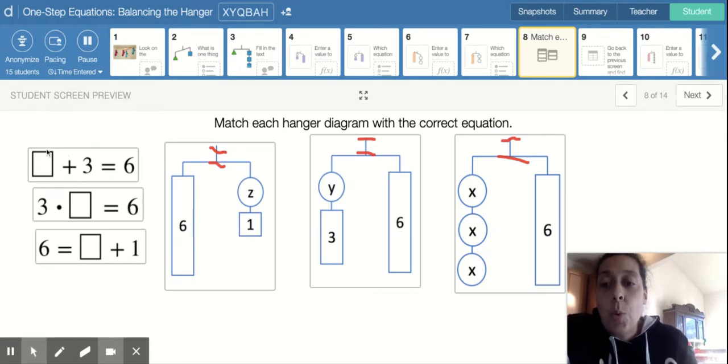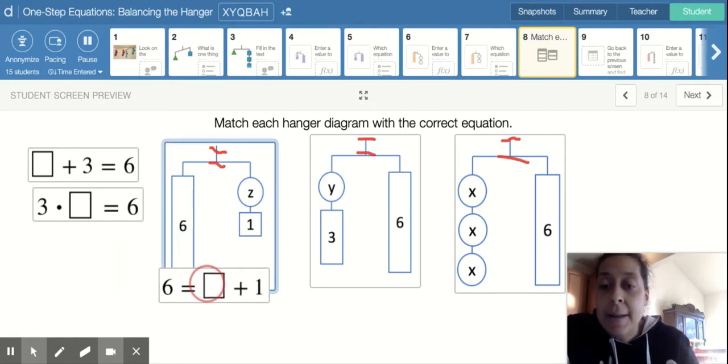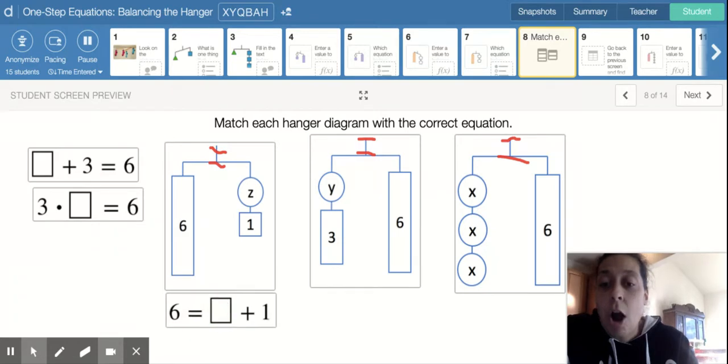So we should know that all of them obviously equal six. Some are written with the expression on the left and the answer on the right. But this one is the answer on the left and the expression on the right. That actually does not make a huge difference. But for this one, it actually does. It should give us a hint that this one and this one are matched up together.